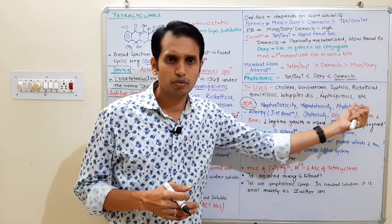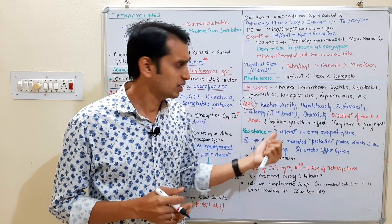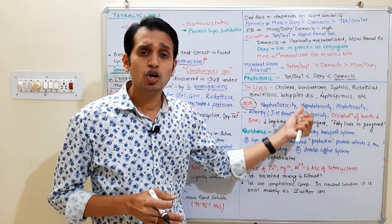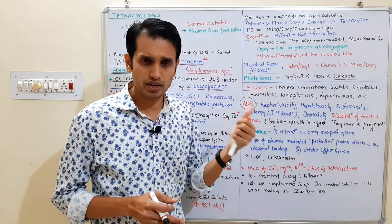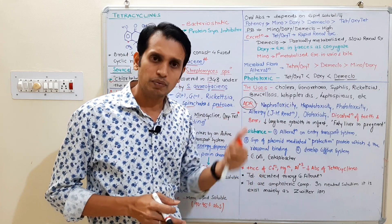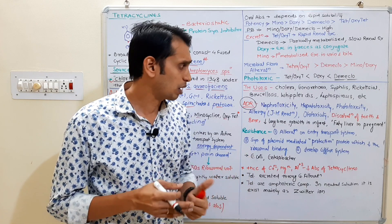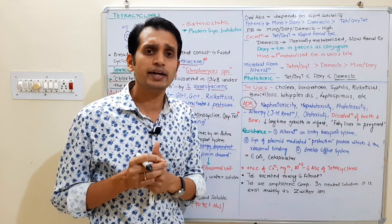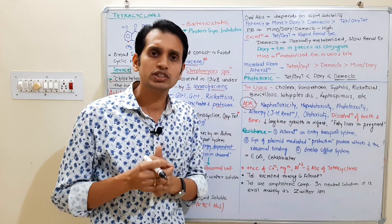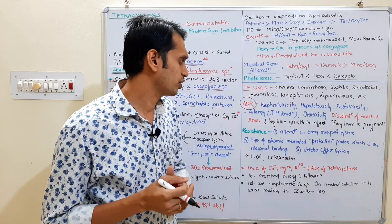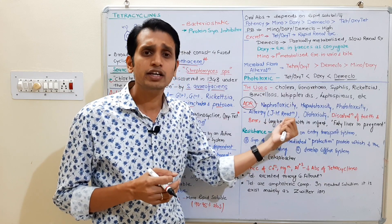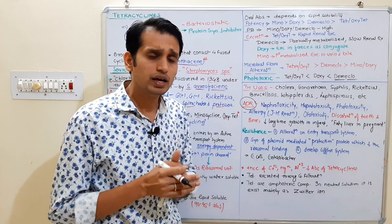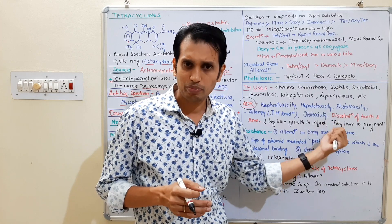Regarding adverse effects: tetracyclines may cause allergy and serious allergic reactions like Jarisch-Herxheimer reactions, similar to penicillins. They may also cause ototoxic effects, mainly affecting the vestibular system. A common side effect is discoloration of bone and teeth — causing yellowish discoloration — and they also decrease long bone growth in infants.